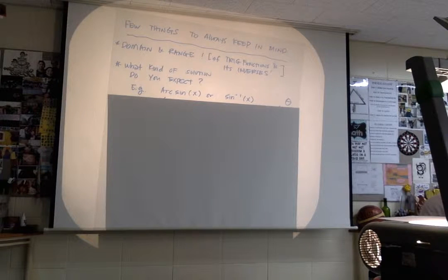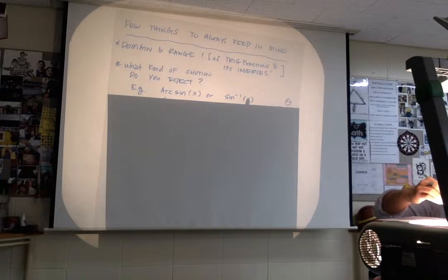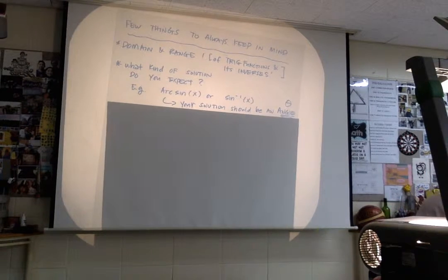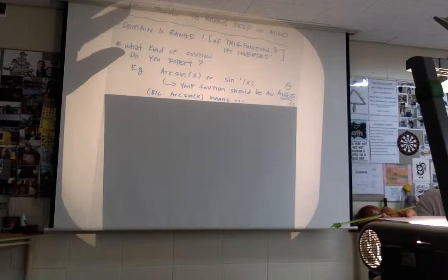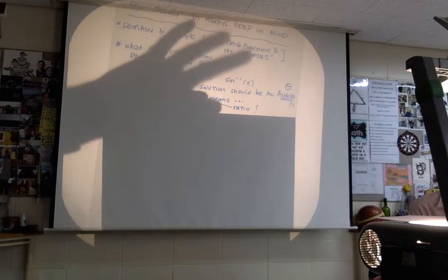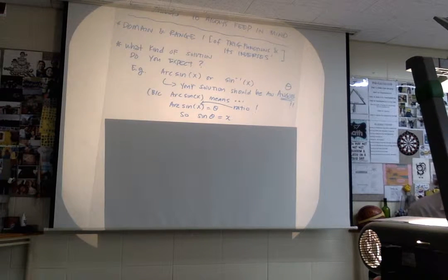For example, if I have arc sine of x — you know how the notation could be written this way — your solution should always be what? You're finding the arc sine, so that means your solution should always be an angle. So you're looking for the angle. Make sure when you find your solution it's actually an angle. Because remember, arc sine means you took arc sine of x which equals the ratio. So that means sine of theta must have equaled x.